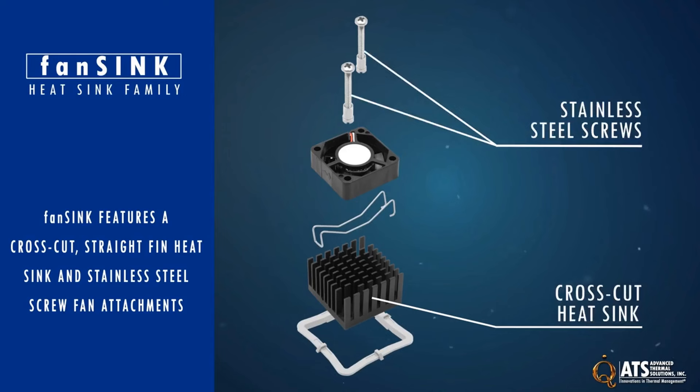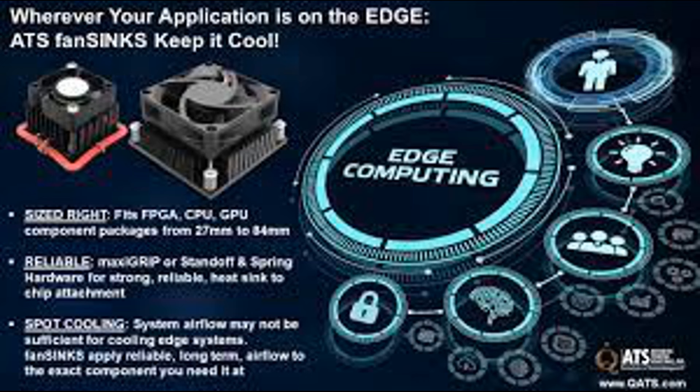This spreading of heat is essential for efficient heat dissipation in the subsequent stages of the cooling process. In summary, heat absorption is the initial step in the heat dissipation process of a heat sink, where thermal energy generated by an electronic component is transferred to the heat sink through conduction, helping to prevent overheating and maintain optimal operating conditions.